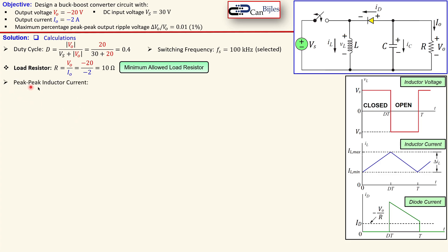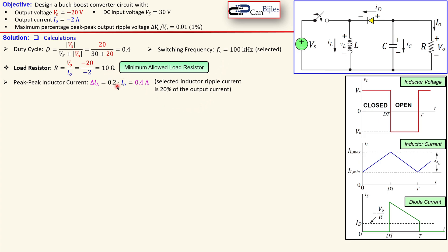The next step is the peak-peak inductor current. This is a selection — most of the time we select a specific percentage of the load current. I select 20 percent of the load current, which is 20 percent of 2 amps, giving 0.4 amps. This is a selection like the switching frequency; you can also take 30 percent or 15 percent. That will affect component values and accuracy, and is also based on experience.